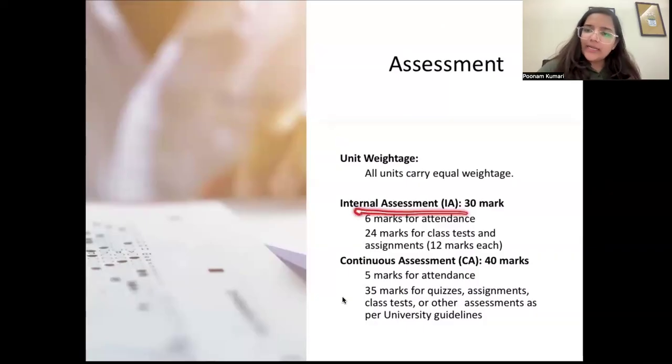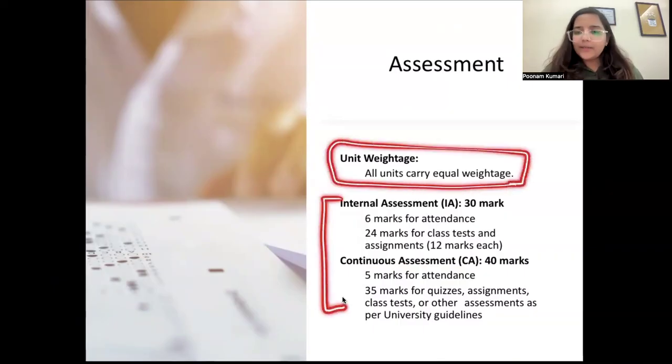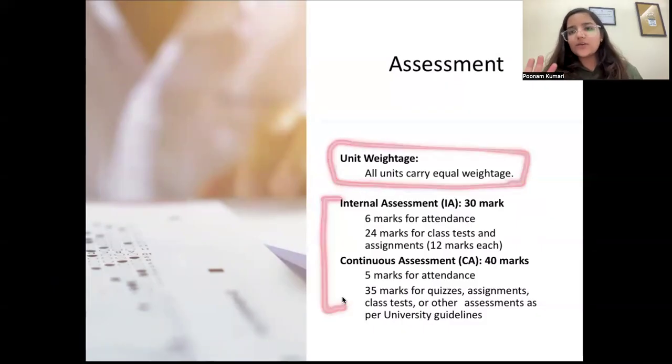Talking about internal assessment: 30 marks for internals, continuous assessment 40 marks. For attendance, 6 marks; 24 marks for two class tests or assignments. For continuous assessment, 5 marks for attendance and 35 marks for quiz, attendance assessment, or class tests—whatever typically happens. For your final paper, only equal weightage for each unit is mentioned, but the paper pattern has not been mentioned in the minutes of the meeting.